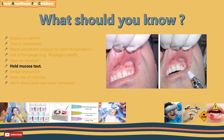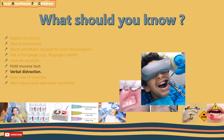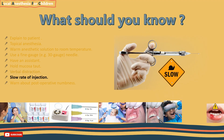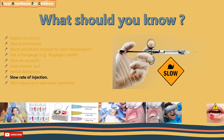Number six: hold the mucosa taut for smoother penetration. Number seven: verbal distraction — it can help at the moment of needle penetration. You can use storytelling, counting, or placing a VR box on the patient's eyes. Number eight: use a slow rate of injection. If you inject too quickly, the tissue won't adapt to the amount of fluid injected and it will cause the tissue to lyse.